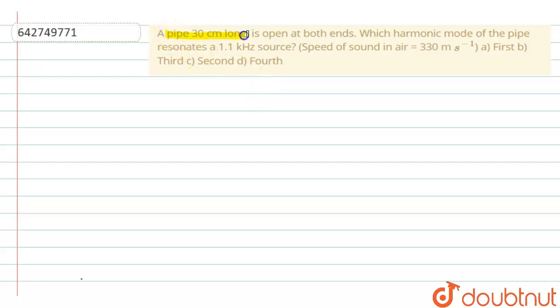Here we will calculate the harmonic mode of the pipe which resonates at 1.1 kilohertz source, and it is given in the question that the speed of sound in air is 330 meters per second.